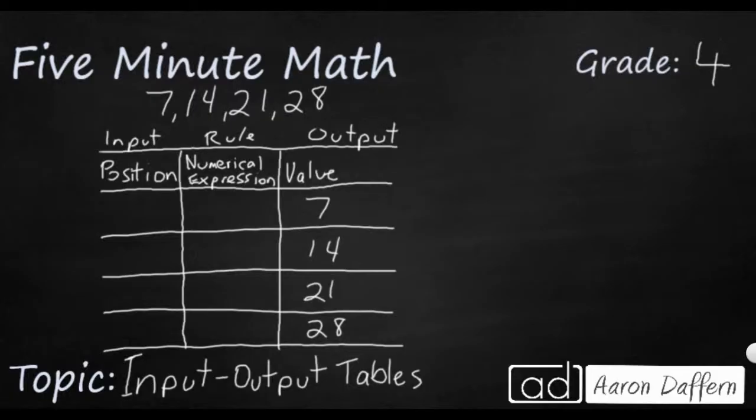So most of you can probably see what needs to happen next, but if not, think of the rule. How are we getting from 1 to 7? How are we getting from 2 to 14? So it's going to be a times 7, or multiply by 7 rule. And since this is the numerical expression, we need to go ahead and just write the position times the 7, which is our rule.